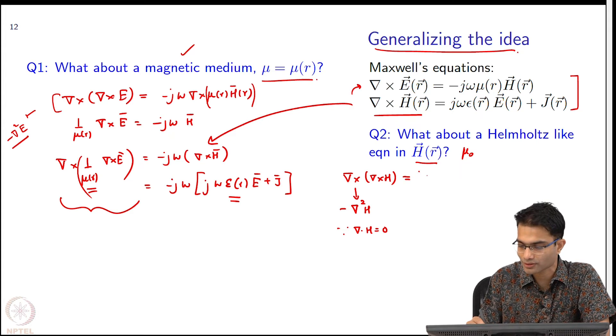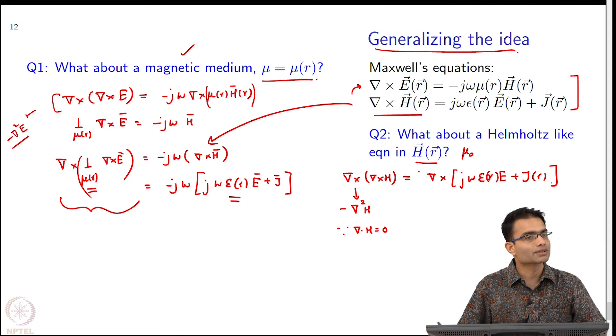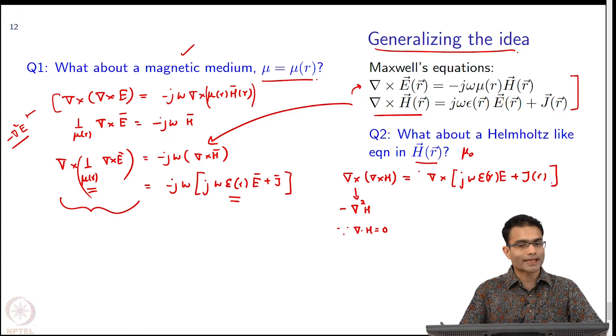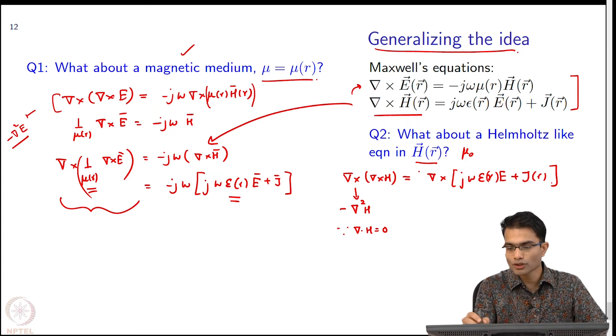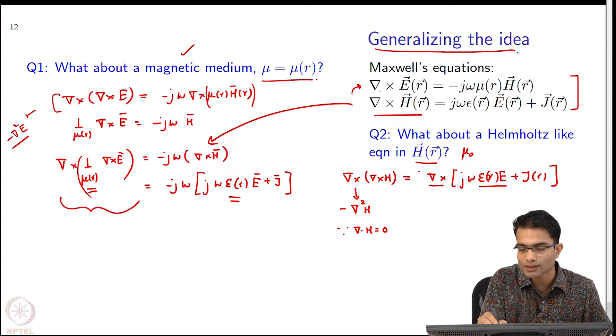But what do I have on the other side? I have a j omega curl of epsilon r E, right. Sorry, I wrote the whole thing again, let us write this. So, I have del cross del cross j omega epsilon r E plus j r. Can I proceed with this? Do I know curl of E, curl of epsilon E? So, I cannot actually get a Helmholtz equation in H because I do not know del cross epsilon E, I only know del cross E.